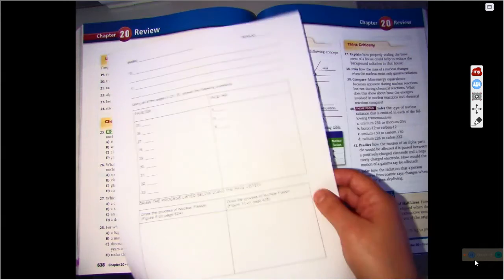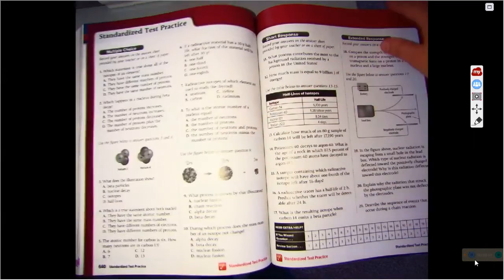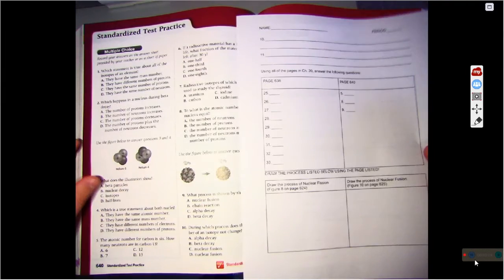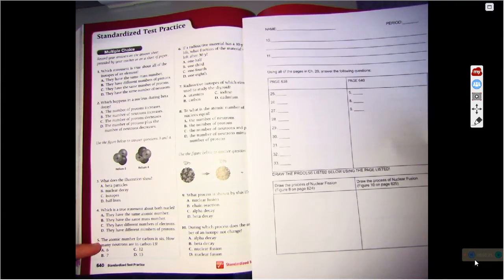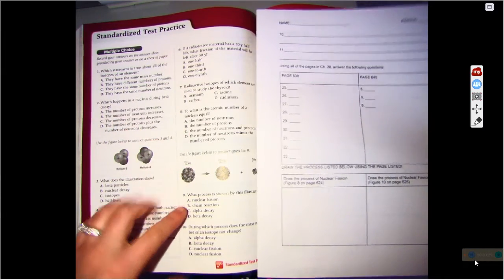All right? And then I said 640. Page 640 right here. I have 5, 8, and 9. So that is we're going to do numbers 5, 8, and 9.